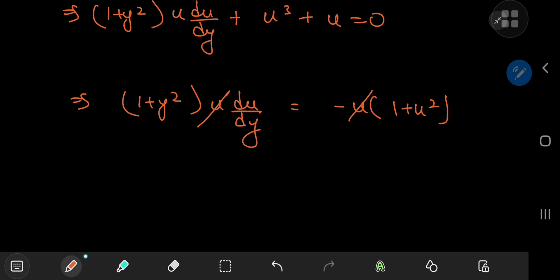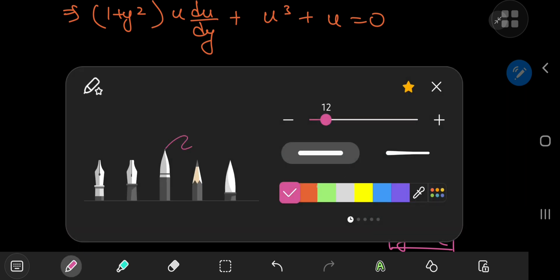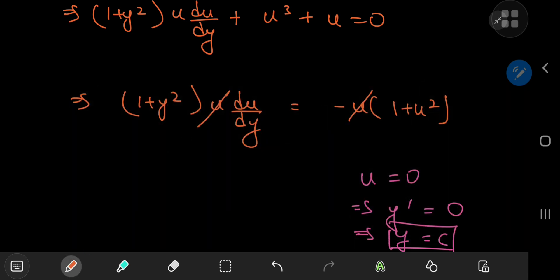But bear in mind that gets rid of one of the solutions. The solution we lose is u equal to 0, which implies that the derivative of y with respect to x is 0, which implies that y equals some constant of integration c. So bear in mind that this step here loses that solution. But we know what it is, and it's trivial, so it's okay, it's fine.